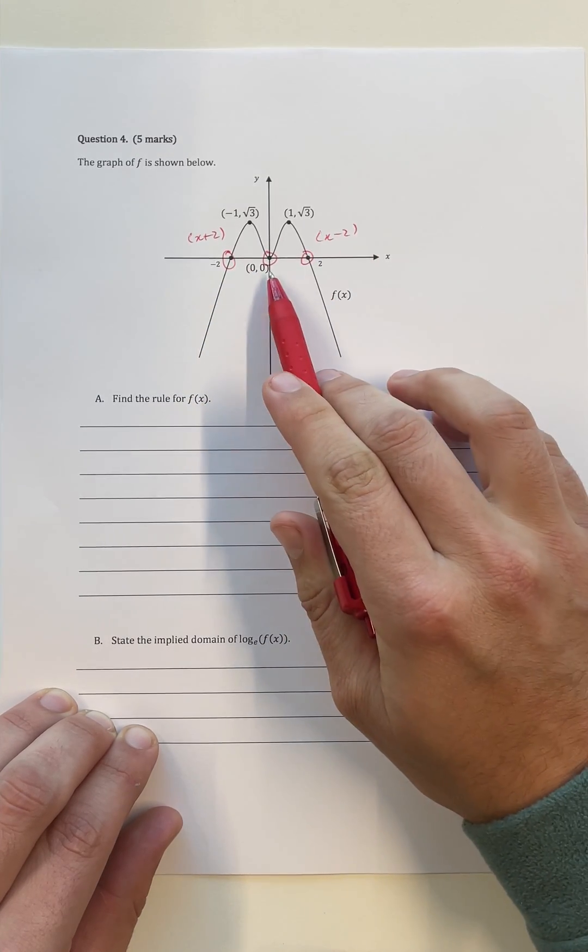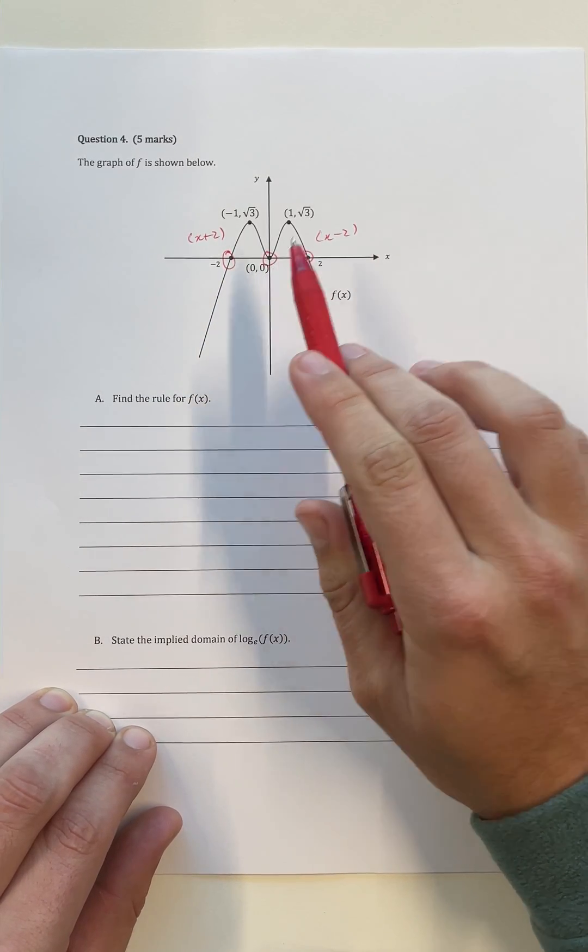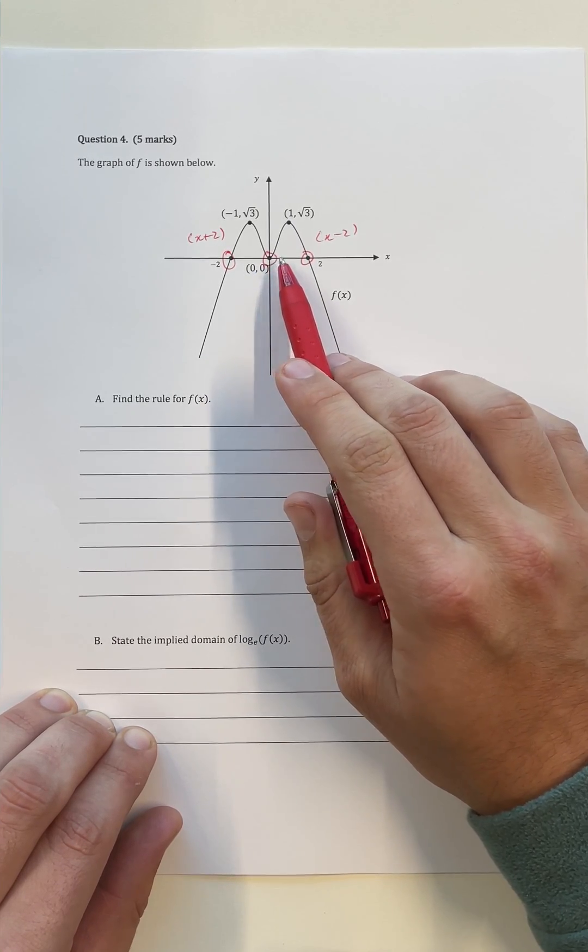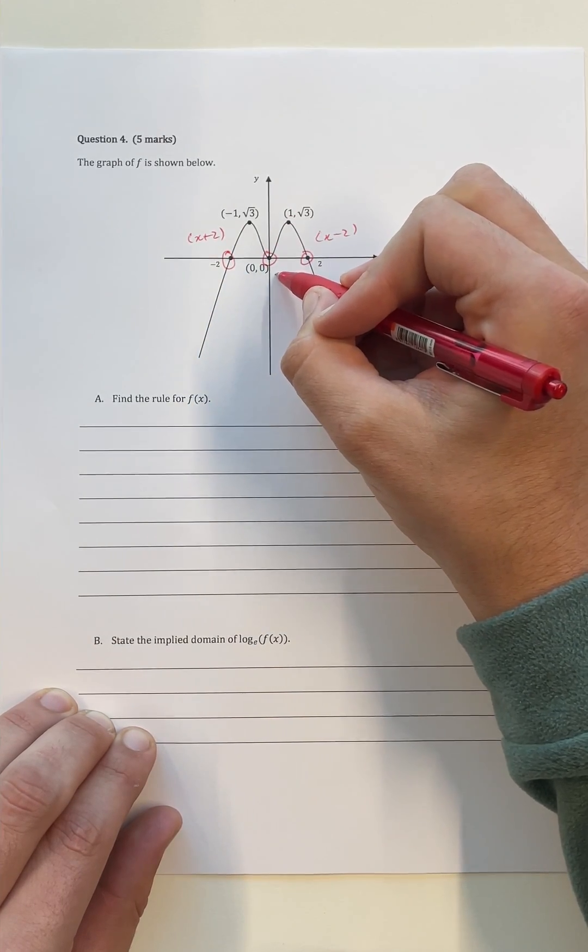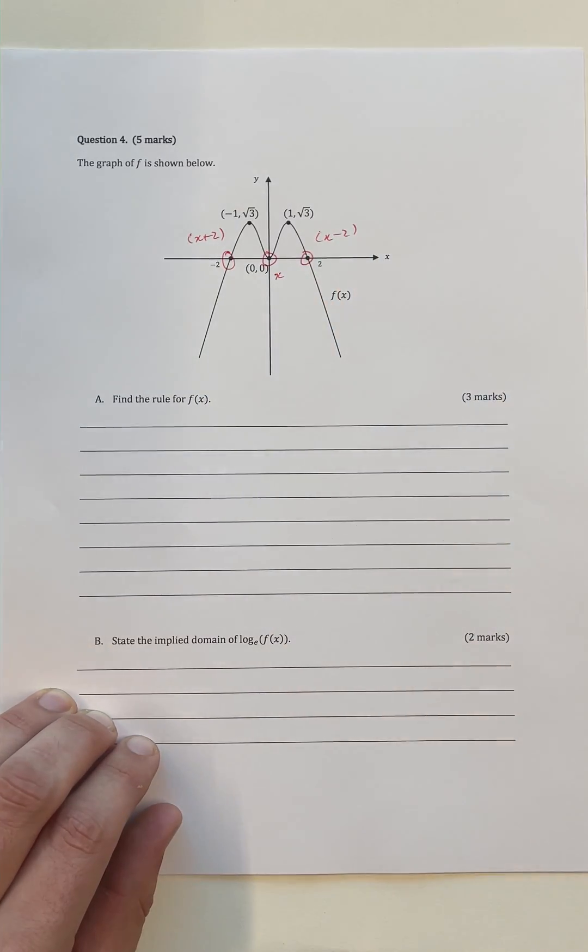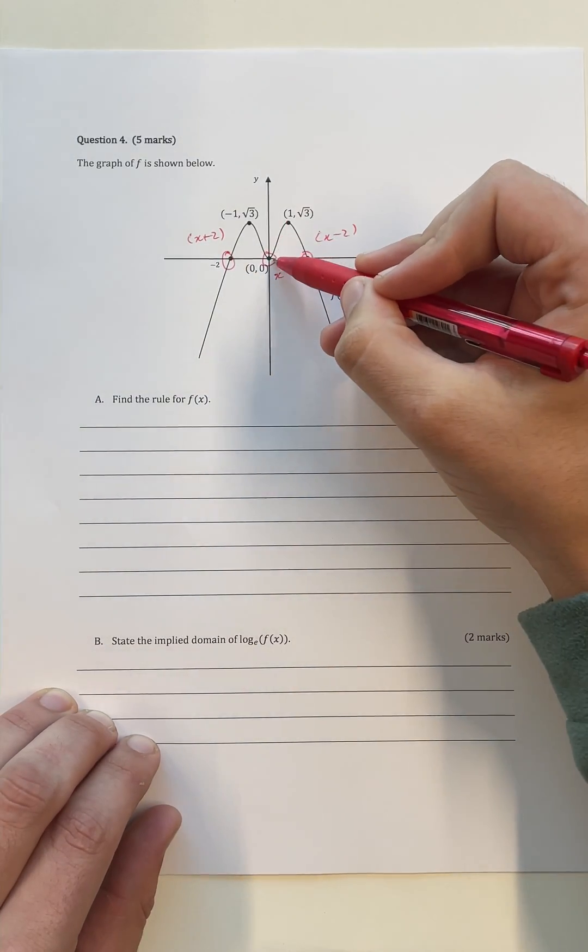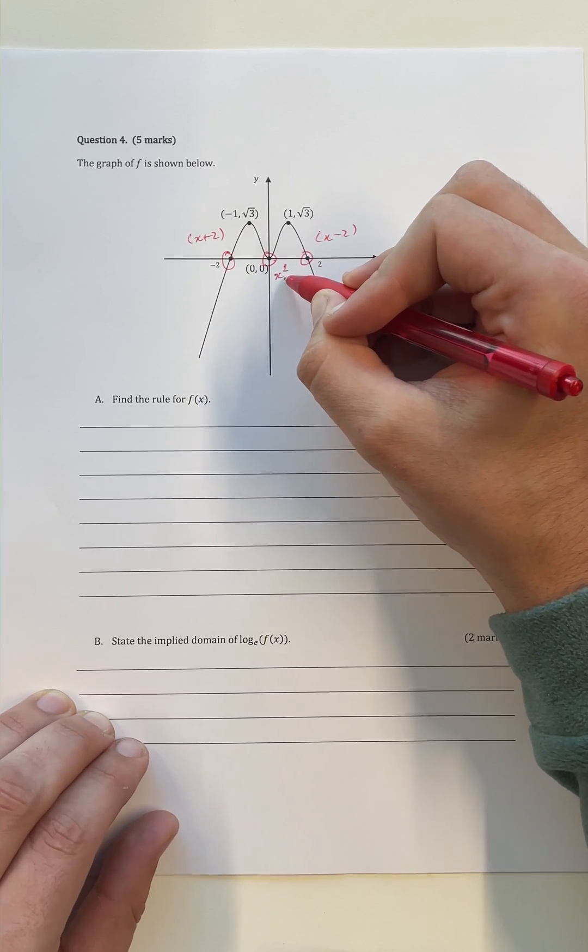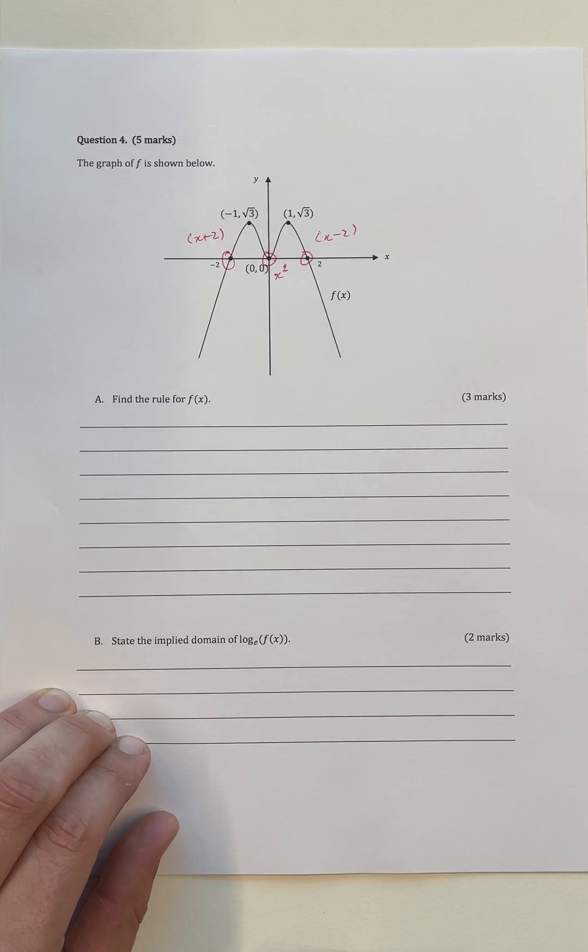Now these are just traditional x-intercepts, but the one at x equals 0 is quite unique. That's because it's not only an intercept but it's also a turning point at the same time. So we have our traditional factor of just x, which gives us a solution of x equals 0. But because we have a turning point as well as an intercept, this is a repeated factor, which means that we have x squared as one of our factors to our equation.